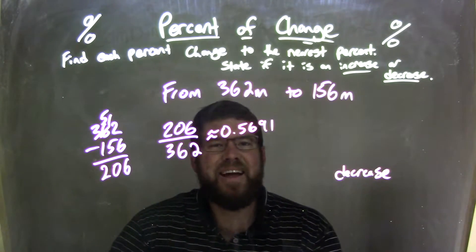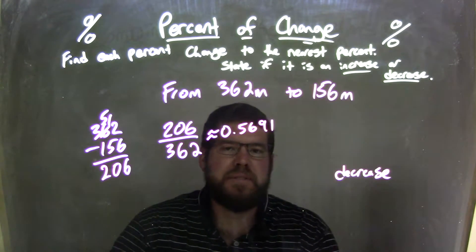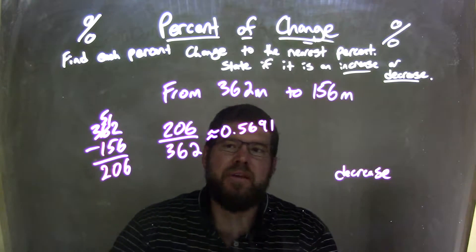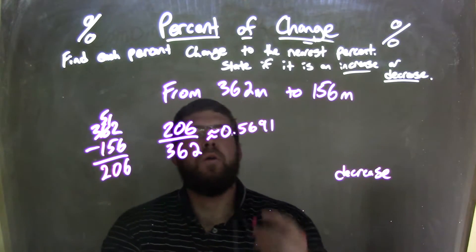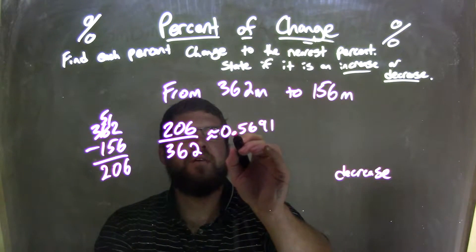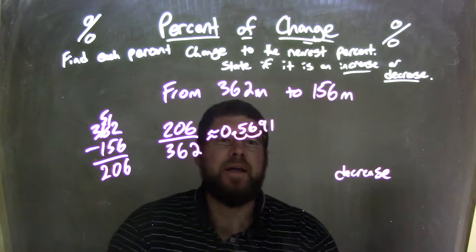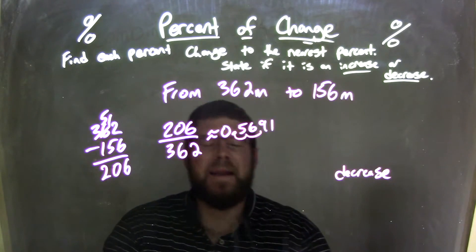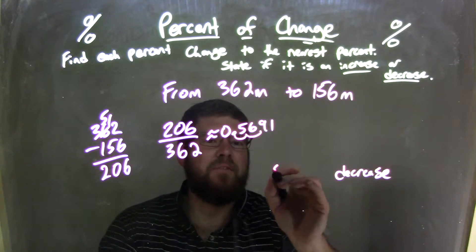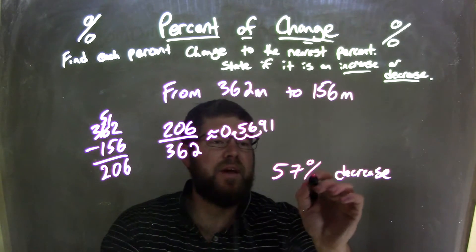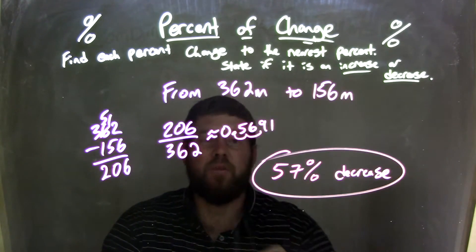So now I'm going to take that decimal and convert it to a percent, and we're going to round to the nearest percent. Well, taking a decimal, we move it two units to the right. Now we're 56, but it's 56.9. Now 0.9 will round the six to a seven, so we can say we have a 57 percent decrease as our final answer.